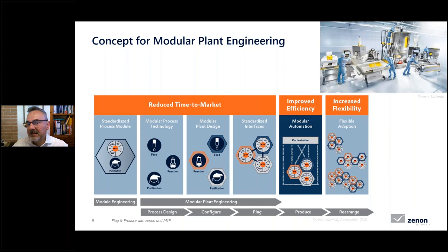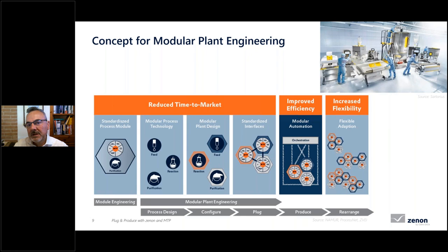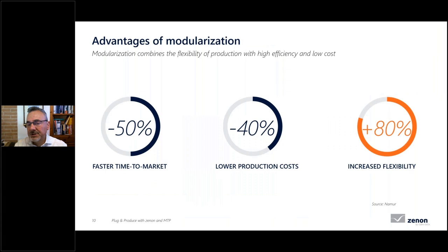Once a batch is finished, it's easy to rearrange and re-adapt the modules. As a process engineer, you simply rent from a catalog of modules available in your facility, use the ones you need, plug them in, orchestrate them, and start producing. According to this concept, NAMUR states a 50% reduction in time to market, 40% reduction in production costs, and 80% more flexibility.